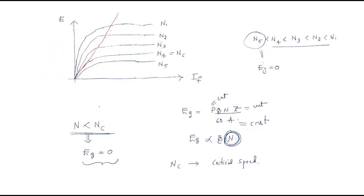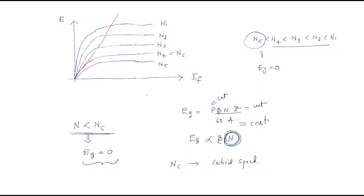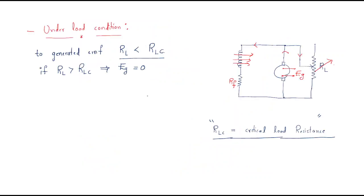Three things are important: first, the critical field resistance; second, the critical speed; third, the critical load resistance. The speed must always be more than the critical speed, the field resistance must always be less than the critical field resistance, and the load resistance must also be less than the critical load resistance.